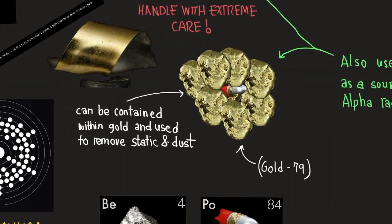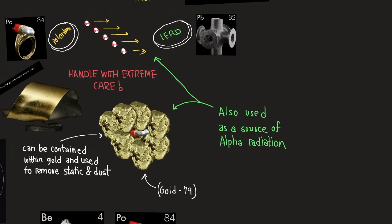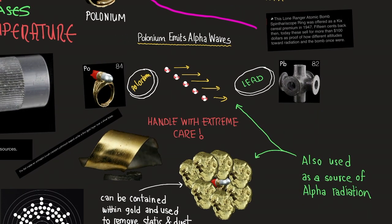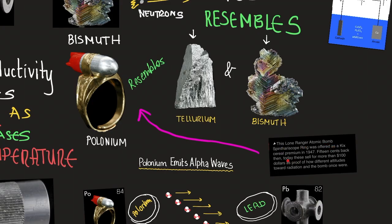Polonium can be contained within gold and used to remove static and dust. It is also used as a source of alpha radiation. The Lone Ranger atomic bomb spinthariscope ring was offered as a cereal premium in 1947. 15 cents back then. Today these sell for more than $100 as proof of how different attitudes towards radiation and the bomb once were.